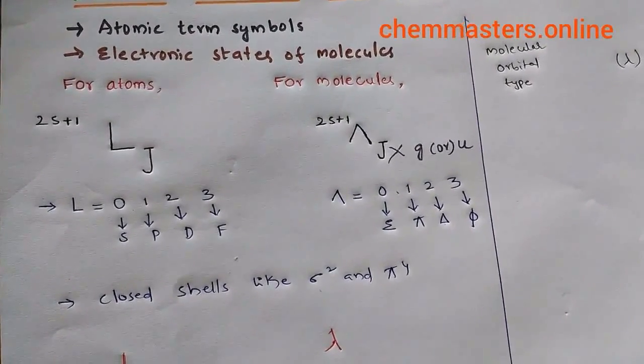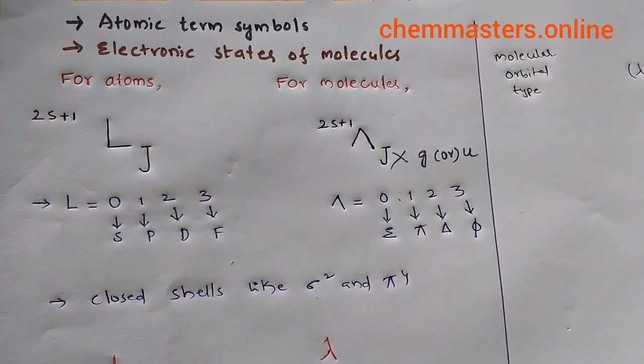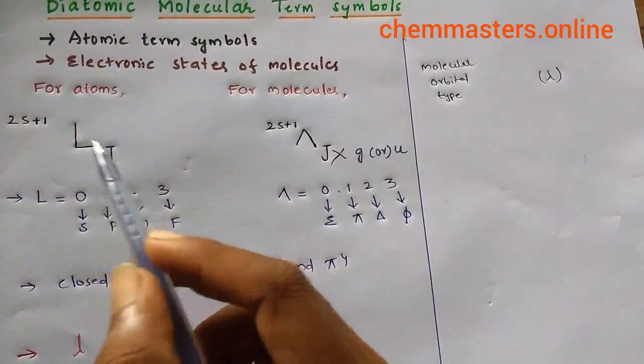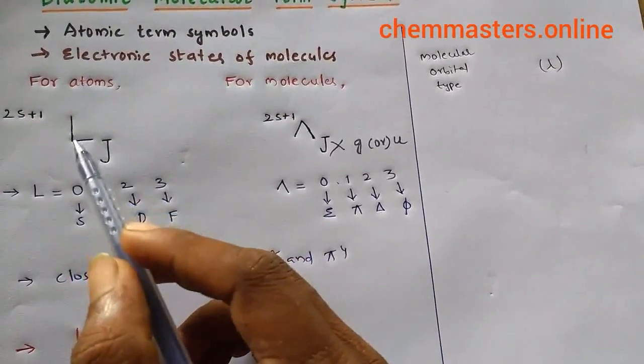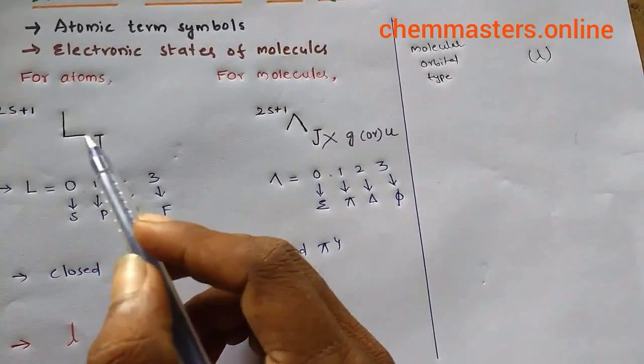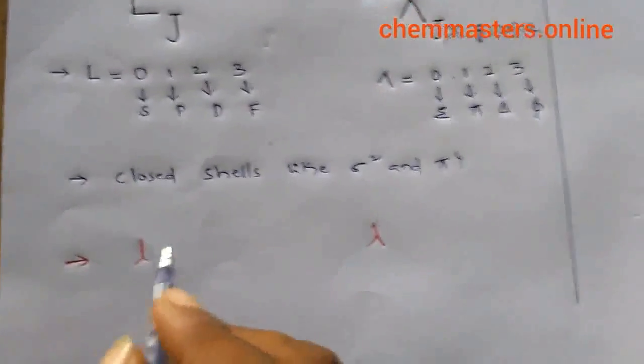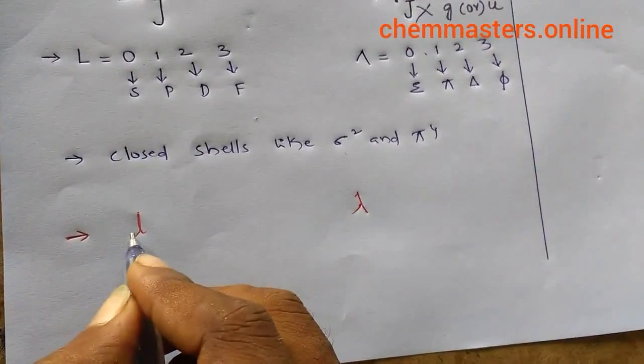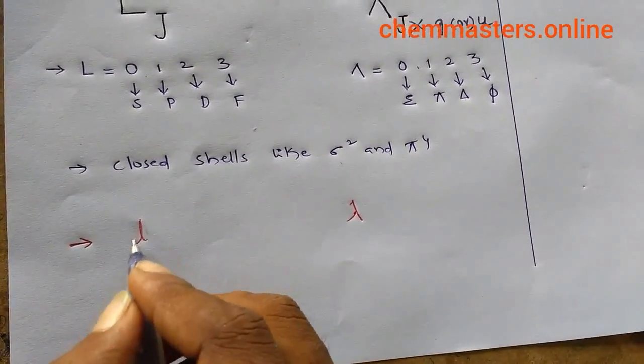For atomic term symbols, to calculate or get capital L (total angular momentum quantum number), we can take it from the angular quantum number l.